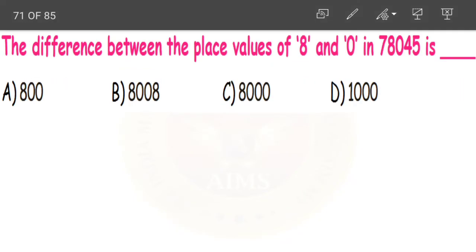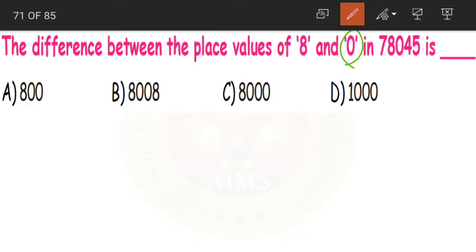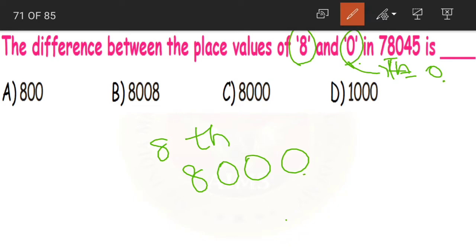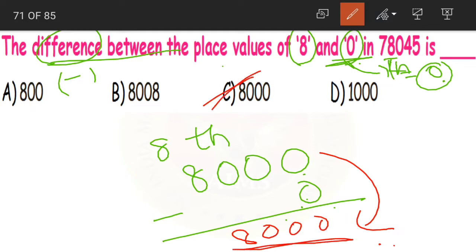Next: the difference between the place value of 8 and 0 in 78,045 is dash. No matter what place 0 is in, its place value is always 0. The digit 8 is in the thousands place, so its place value is 8,000. The difference is 8,000 − 0 = 8,000. When we subtract 0 from any number, the answer is the number itself. So 8,000 is the correct answer — that is option C.